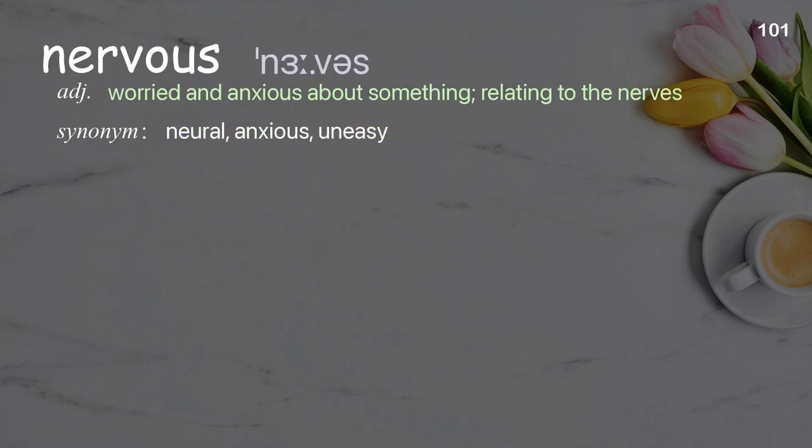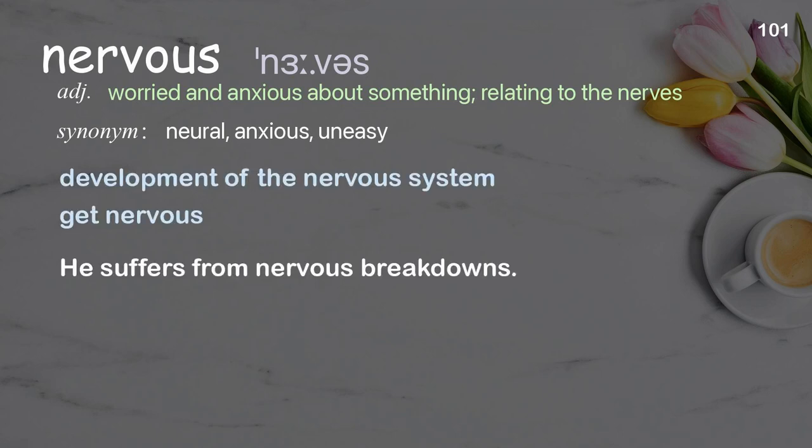Nervous: worried and anxious about something; relating to the nerves. Examples: development of the nervous system, get nervous. He suffers from nervous breakdowns.